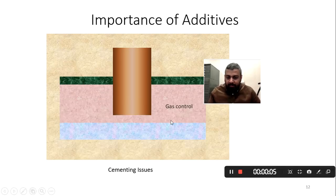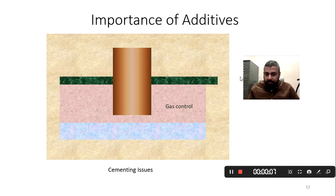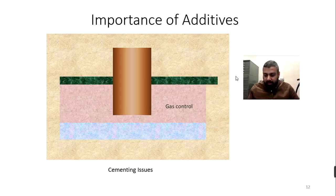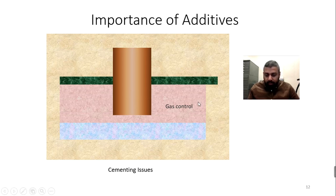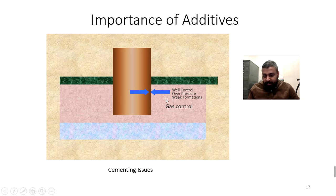Welcome back to the channel. Today we are discussing the additives used for the primary cementing job. Before we look at those additives, let's look at what kind of scenarios we can have in the oil well. When we are cementing, we might encounter a very high-pressured, over-pressured zone which might come to the surface and create problems for us.